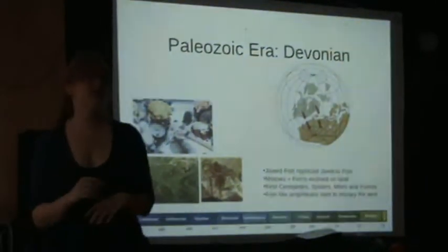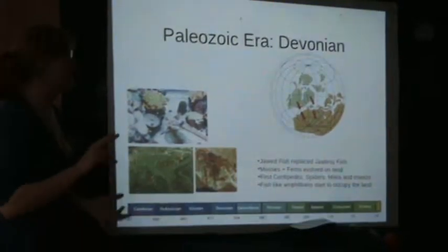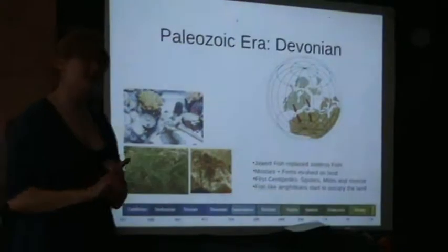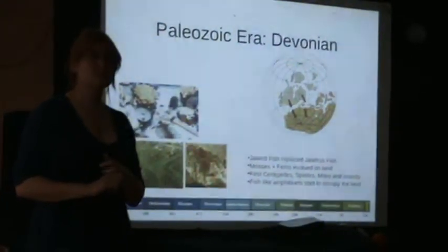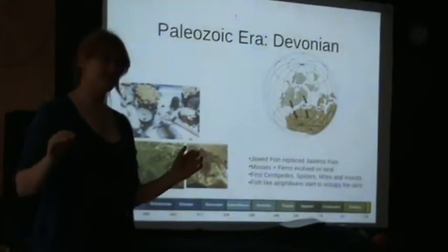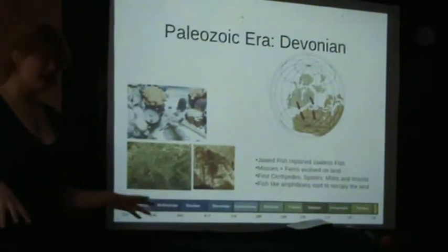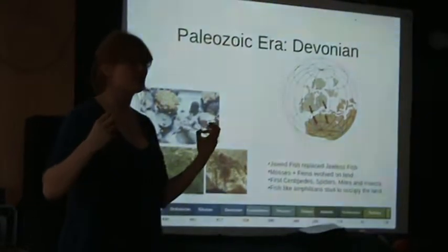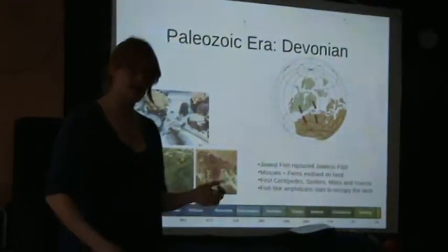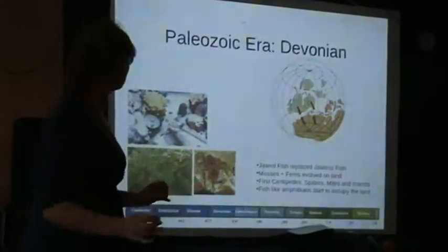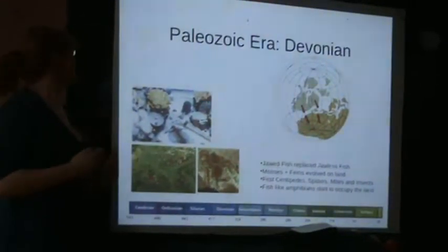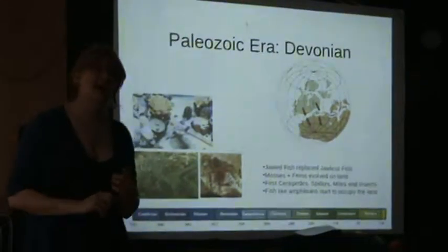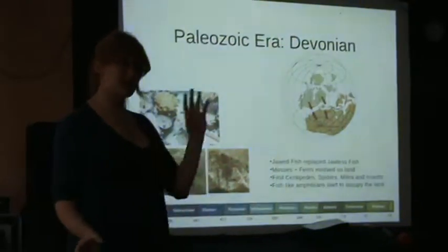During the Devonian period, we saw even more change. Jawed fish started to replace jawless ones. We saw mosses and ferns arrive on land — a very significant event because, unlike the previous Cooksonia, they actually had roots. These roots helped with the weathering of rocks, meaning we got the very first forest soil on this planet. Within the fauna, we saw the first centipedes, spiders, mites, and insects occurring. We also had the first fish-like amphibians venturing onto the land.